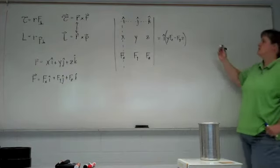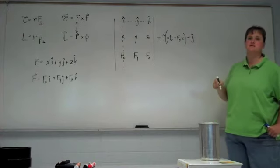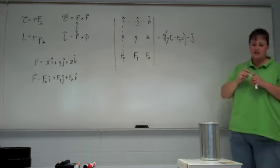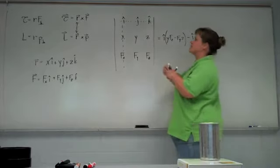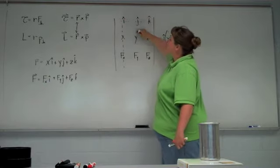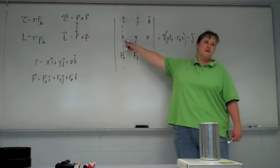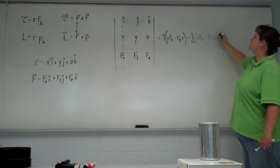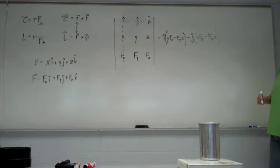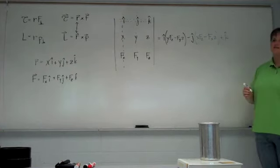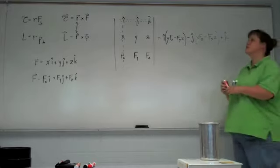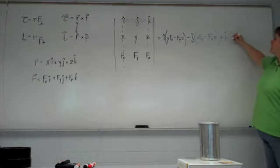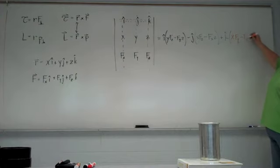Here's the tricky part: the j component is always negative — that's the matrix rule. There are even and odd positions within the matrix. So when you compute the j-hat term, you always put a minus sign in front of it. But you do the same thing: cross out the row and column containing j, start with the top-left value, multiply the diagonals — x times Fz — and subtract the other diagonals multiplied together. The k-hat term is back to positive: cross out the row and column with k, start with the top-left, multiply its diagonal, and subtract the other diagonal.